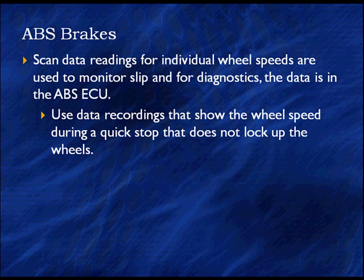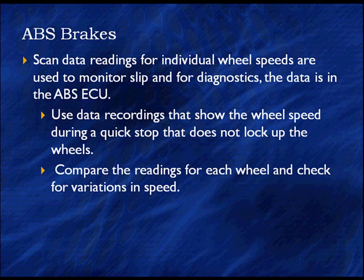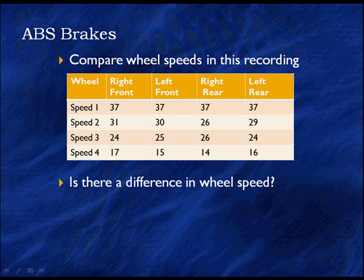We're going to go out and brake briskly but not lock the wheels up. Then we're going to compare the reading for each wheel to check for variations in wheel speed. Looking at our chart, we've got speed 1, speed 2, speed 3, speed 4 — that's four points where we captured the speed.